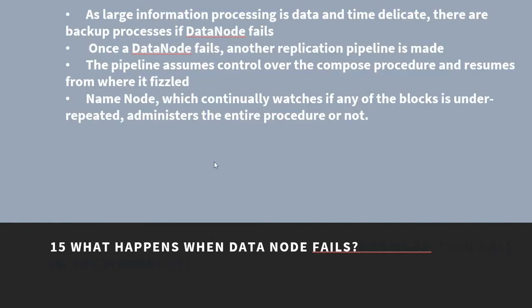What happens when a data node fails? There are backup processes in place when a data node fails. Once a data node fails, another replication pipeline is created. The pipeline assumes control over the write procedure and resumes from where it stopped. The name node, which continuously watches if any of the blocks is under-replicated, administers the entire procedure.